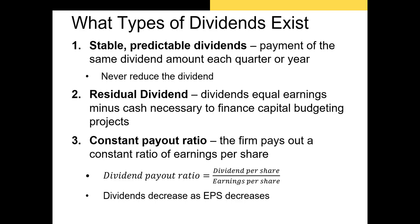Next, we have the constant payout ratio dividend. Sometimes firms will not set their dividends at a fixed dollar amount, but instead use a percentage of earnings. The dividend payout ratio is dividends per share divided by earnings per share — it represents the percentage of earnings that a firm is paying out to shareholders each quarter. Occasionally, a firm will set a target payout ratio, meaning the actual dollar value paid to shareholders will change as earnings per share increase or decrease.